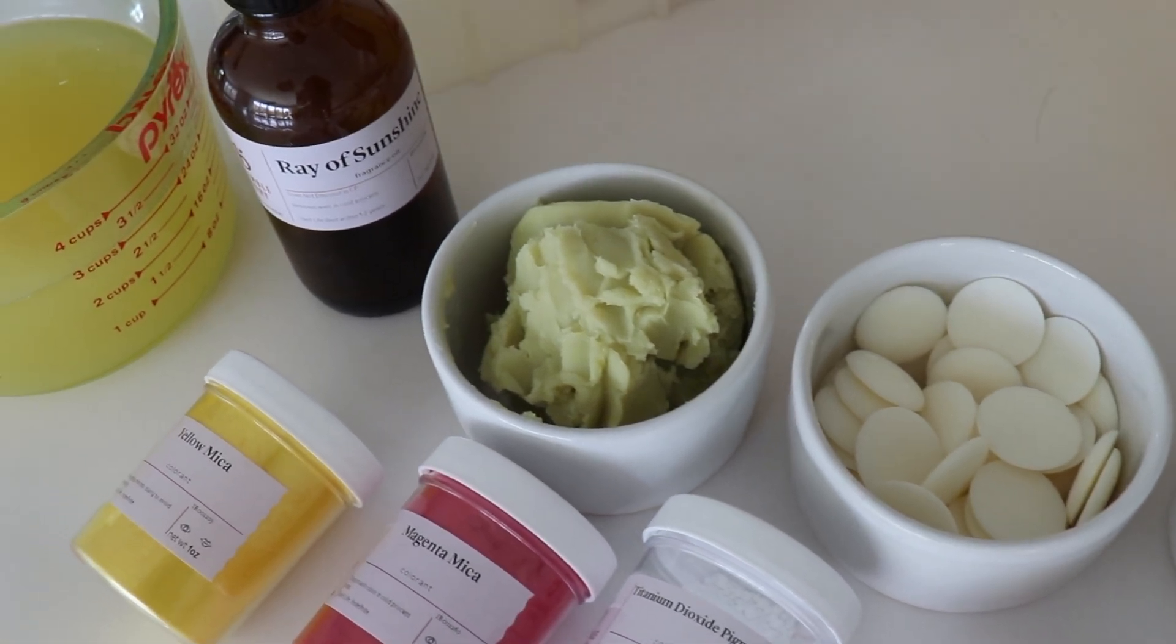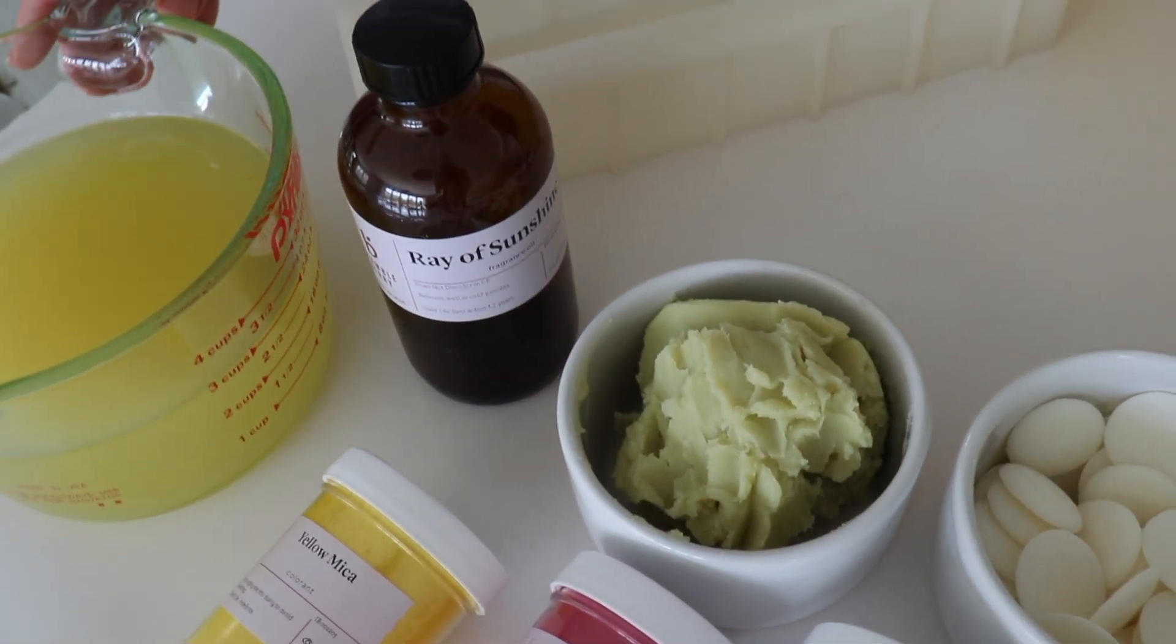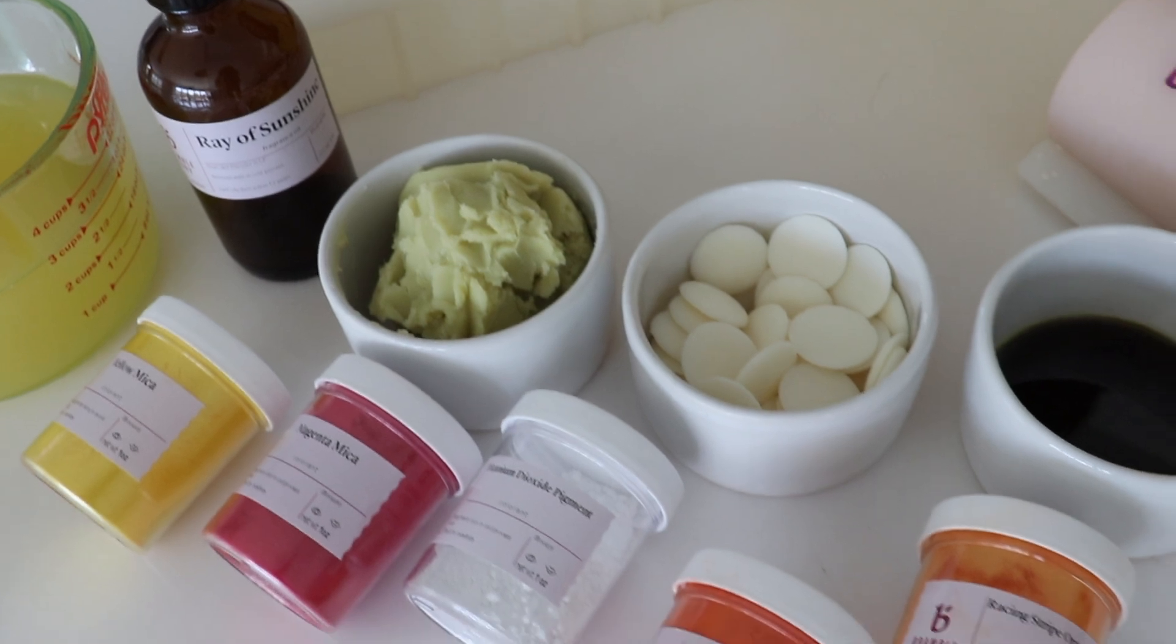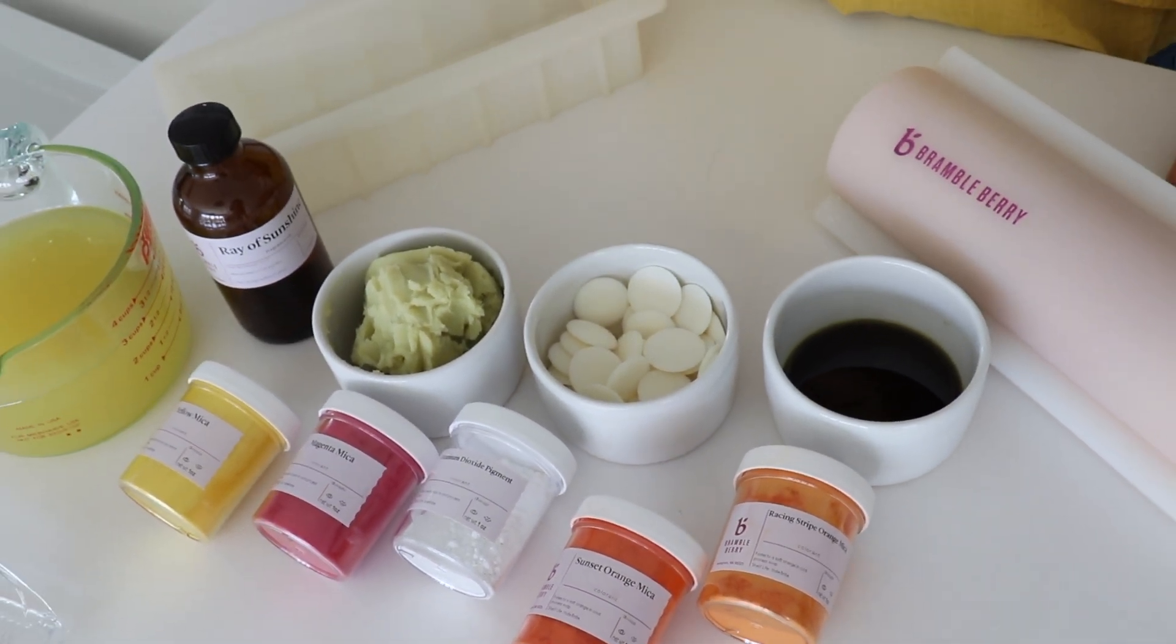I've gathered my ingredients here including the two molds I'll be using, plus the hemp oil, hemp butter, and the Ray of Sunshine fragrance from Bramble Berry's Bohemian Blooms collection.